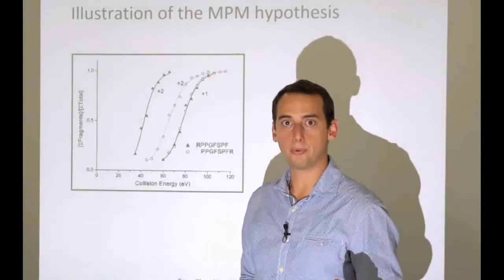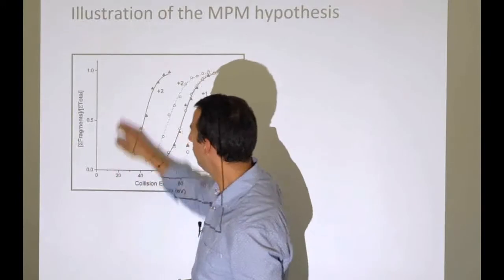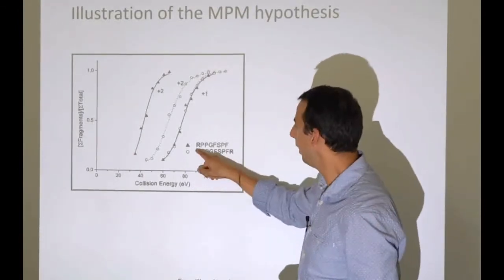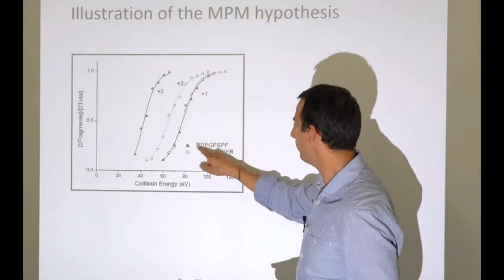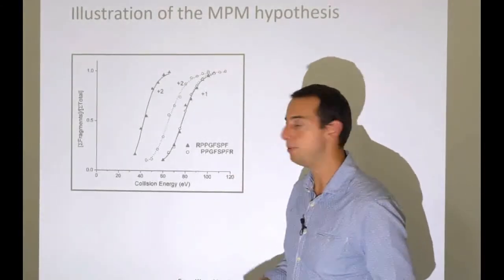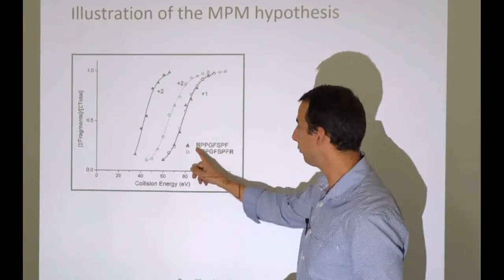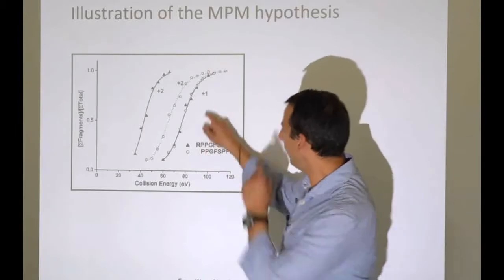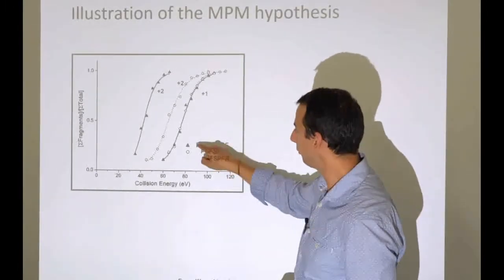We have two peptides specifically built for this purpose. One has arginine at the N-terminus and phenylalanine at the C-terminus. Here we have one with proline at the N-terminus and arginine at the C-terminus. We've just moved the arginine to the back, swapping its location. For a singly charged version of this peptide, there's only one proton that can possibly be mobile.